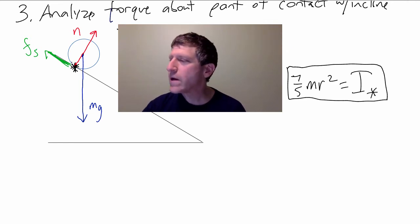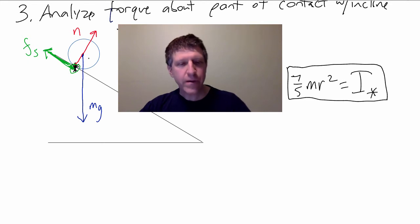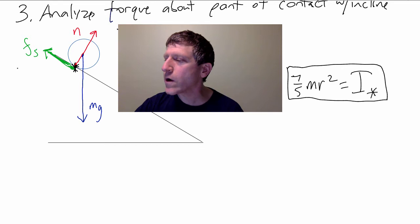The force of static friction. Does that exert any torque about this axis? Well, what is R? The distance from the axis of rotation to the point of force application. Notice that the force is being applied right there. So, the R is zero. This exerts no torque.